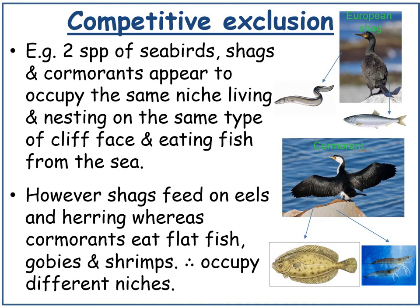As an example of competitive exclusion: two species may appear to occupy the same niche, but closer inspection reveals differences. Shags and cormorants both live and nest on the same cliff face and eat fish from the sea, but shags feed on eels and herring whereas cormorants eat flat fish, gobies, and shrimps. Therefore they occupy different niches — you can never have two species occupying exactly the same niche.